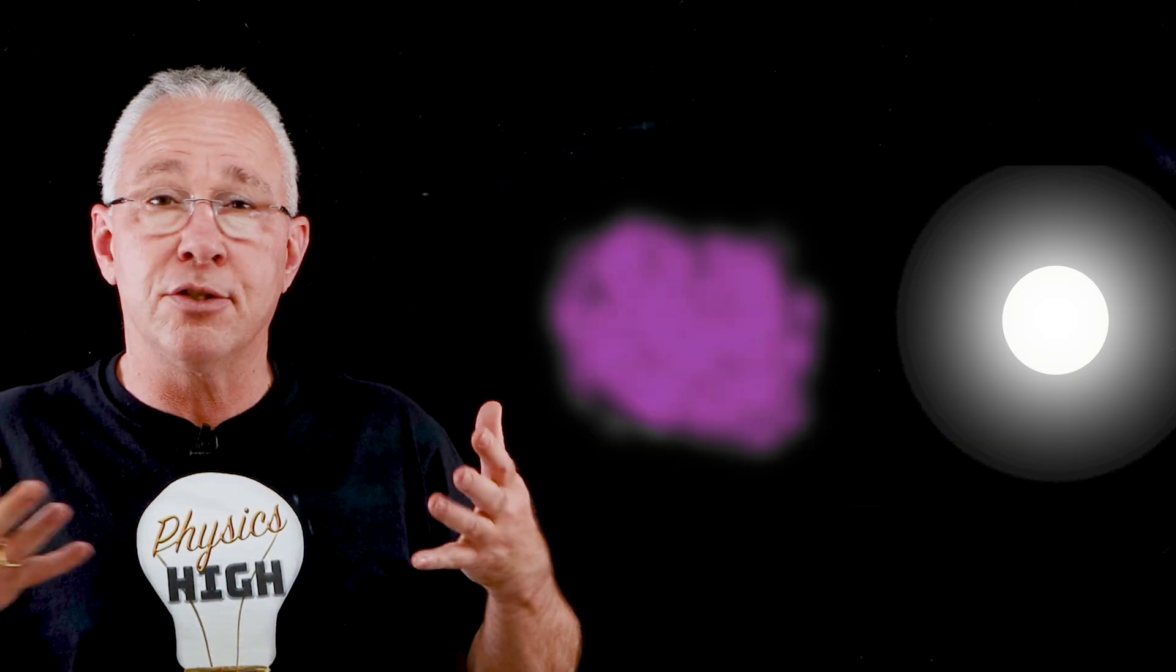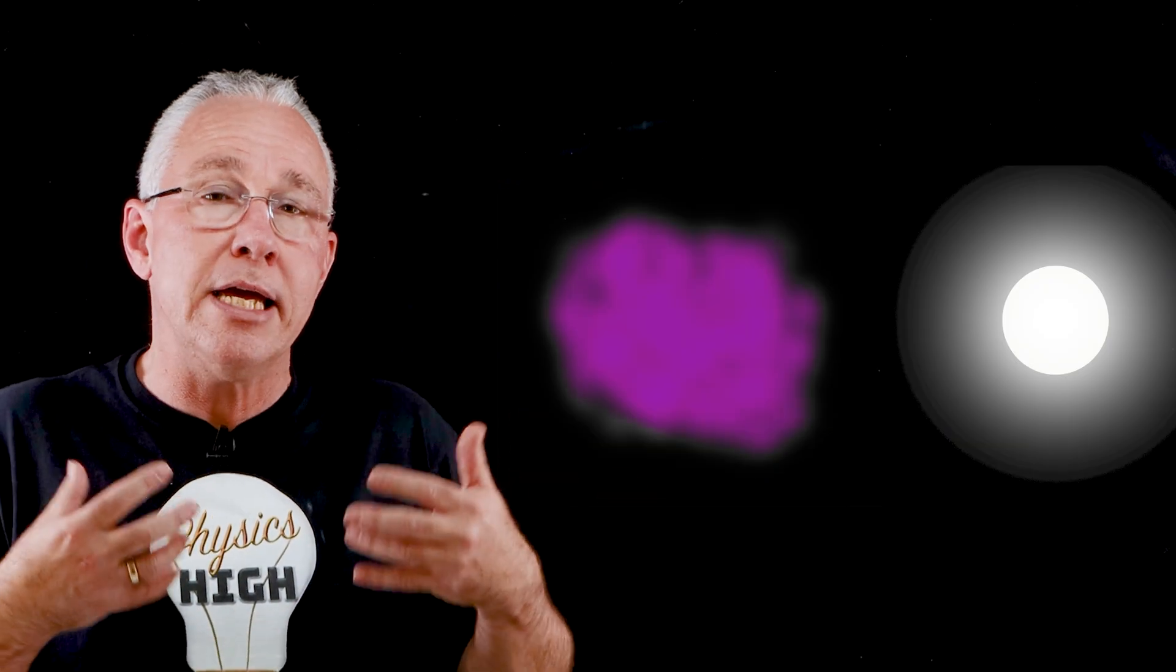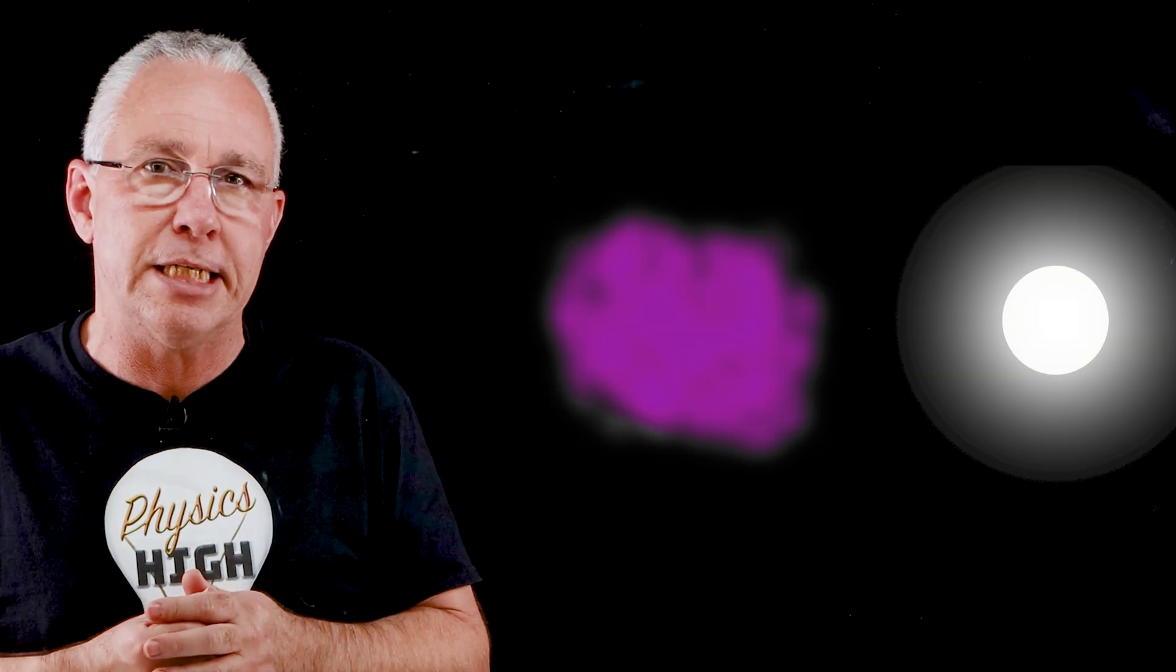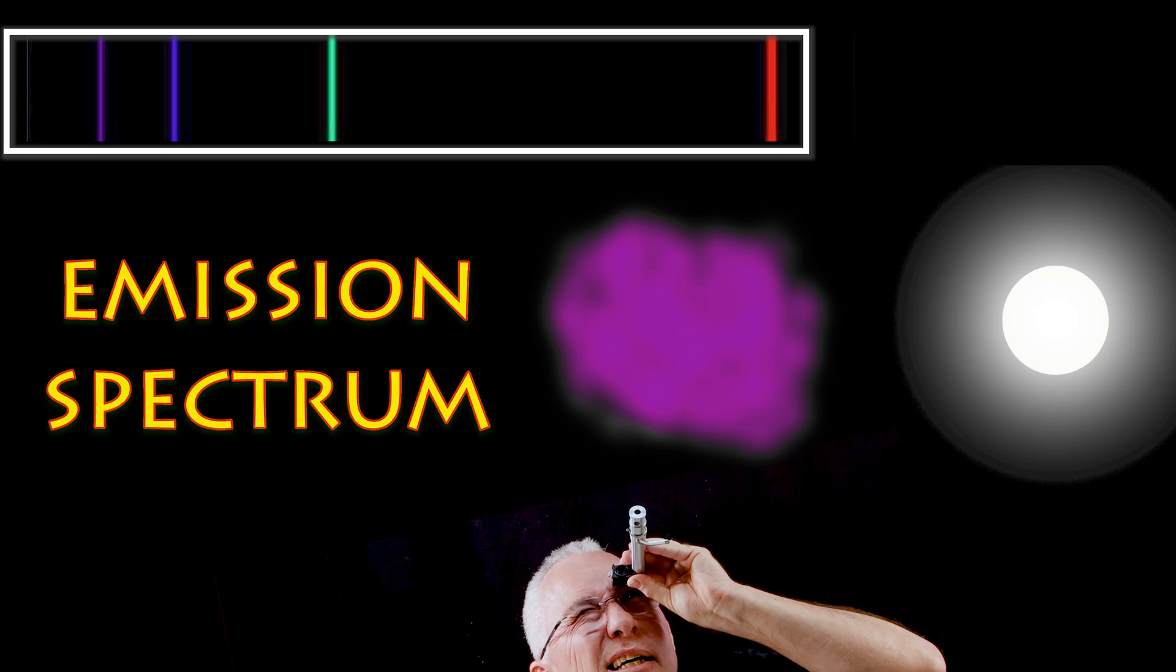But of course, this gas then starts to glow. But it'll only emit, as those electrons jump down to the corresponding energy levels, specific types of frequencies. What we end up getting is an emission spectrum.